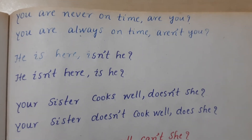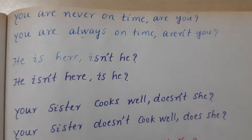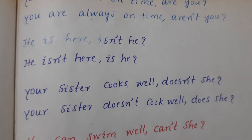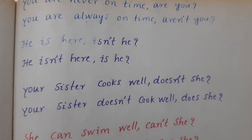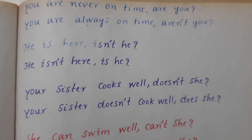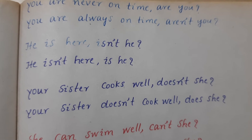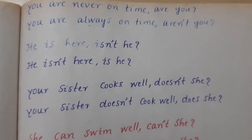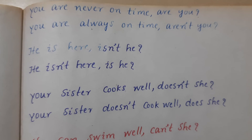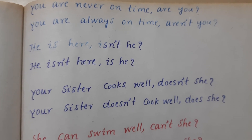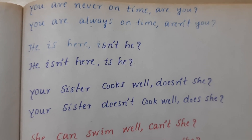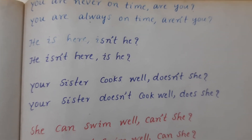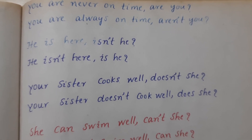'You are always on time, aren't you?' — positive statement, negative tag. 'He is here, isn't he?' — positive statement, negative tag. 'He isn't here' — negative statement, so question tag is positive: 'is he?'